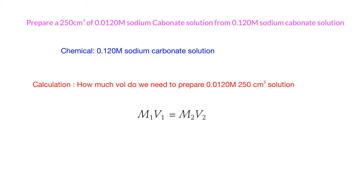So we'll have one more zero right there. The chemical that we use - this one is a stock solution. We have 0.12M sodium carbonate solution. First of all, we have to calculate how much volume of this stock solution is needed to prepare our 250 cm³ of this one.